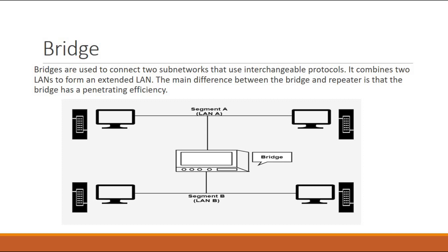Next is bridge. A bridge connects two subnetworks that use interchangeable protocols, combining two LANs to form an extended LAN. The main difference between a bridge and a repeater is that the bridge has filtering efficiency. As shown, you have Segment A with LAN A and Segment B with LAN B. By making a bridge connection, LAN B can access LAN A and LAN A can access LAN B — creating communication between two segments.